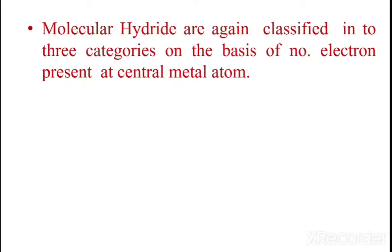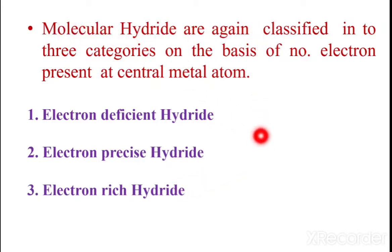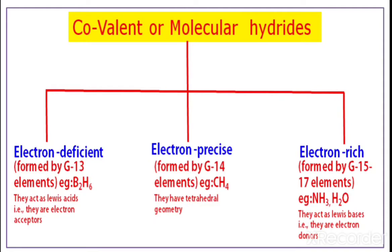Molecular hydrides are again classified into three categories on the basis of the number of electrons present at the central atom: number one, electron deficient hydrides; number two, electron precise hydrides; number three, electron rich hydrides.